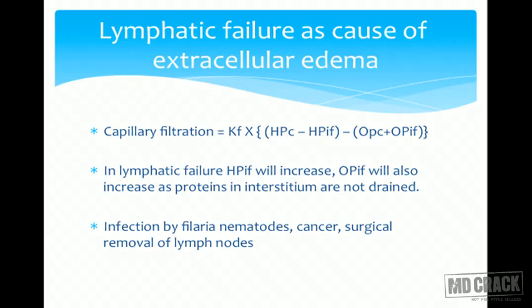Examples of lymphatic obstruction include filariasis or elephantiasis, where filarial worms block lymphatic channels. Cancer metastasis can also block lymphatics, as metastatic cells are carried by lymphatics and cause blockage. In cancer patients undergoing surgery, draining lymph nodes or lymphatic channels are removed, causing obstruction. The area drained by those lymphatics develops edema.